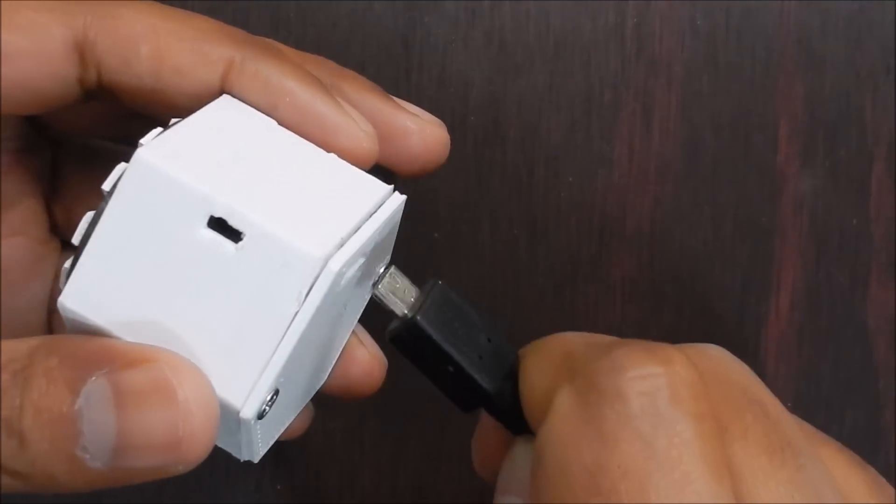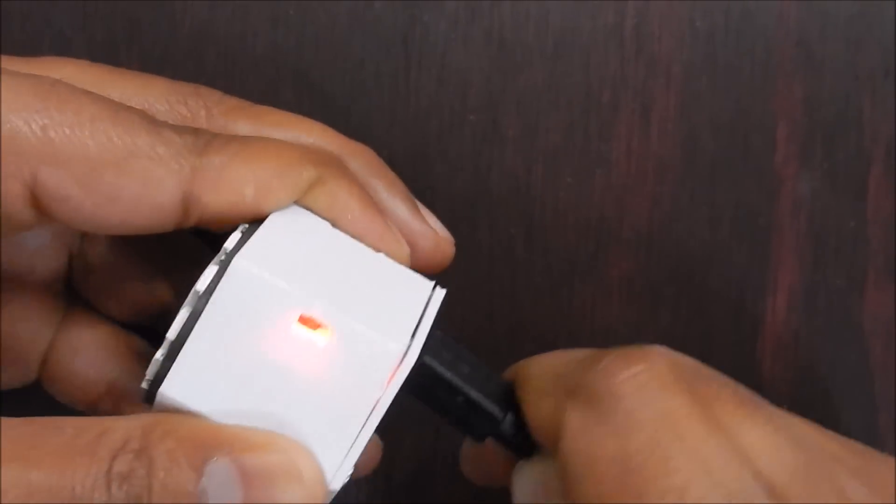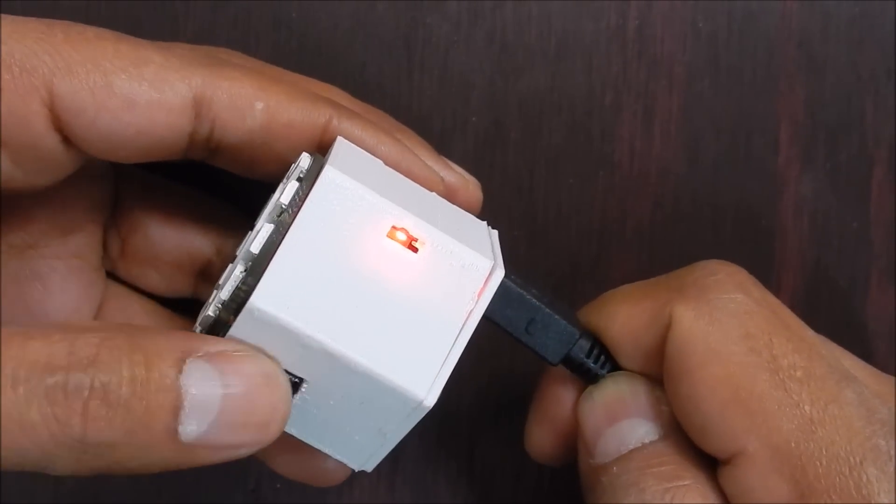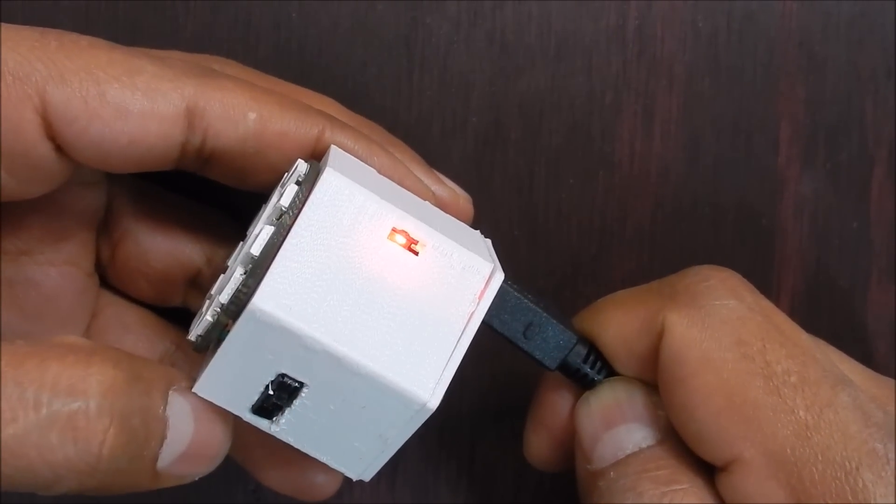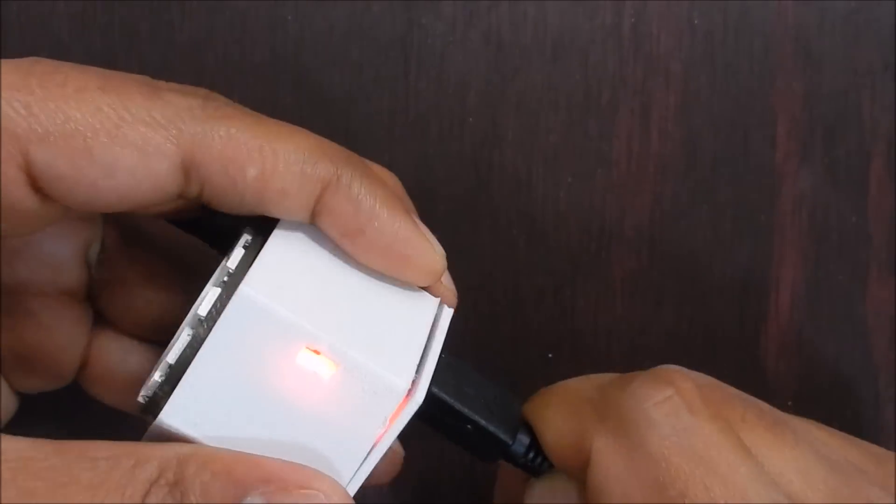You can charge the pendant by connecting a micro USB cable to the charging port in the back. The orange LED indicates charging and a green LED will light up when charging is complete.